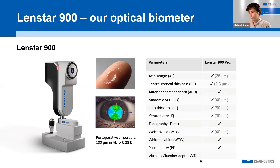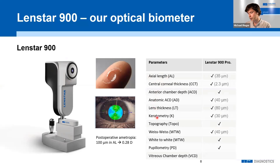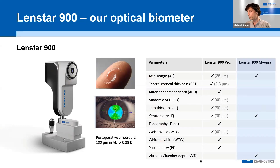I'll quickly introduce our optical biometer, the LENSTAR 900, which allows determining numerous biometric parameters — for example, axial length, lens thickness, keratometry, and pupillometry. We also have a stripped-down version focused on axial length for our myopia management solution.